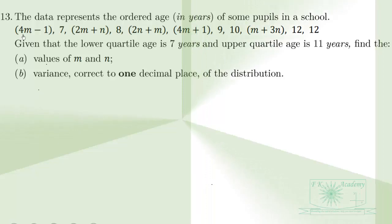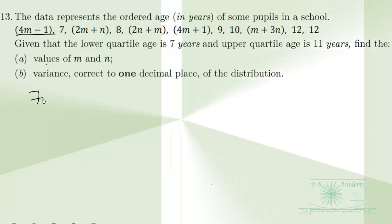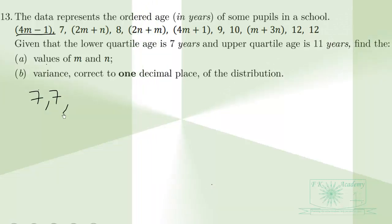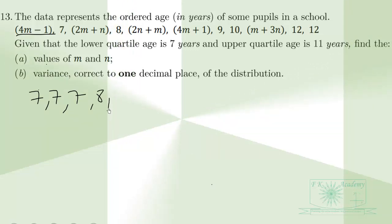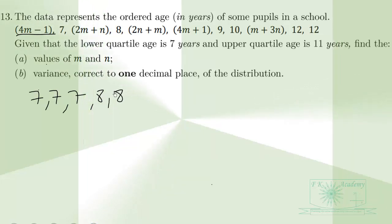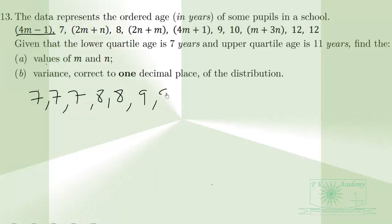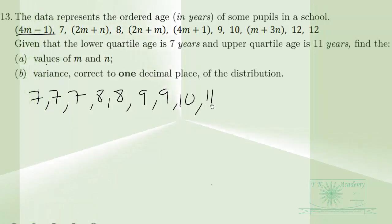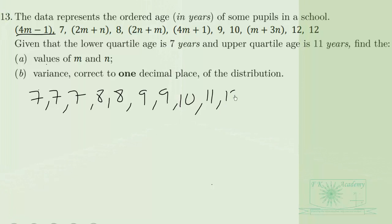Substituting M = 2 and N = 3 into the expressions: we get 7, 7, 7, then 8, 8, 8 (since 2N + M = 8), then 9 (since 4M + 1 = 9), 9, 10, 11 (since M + 3N = 11), 12, and 12.